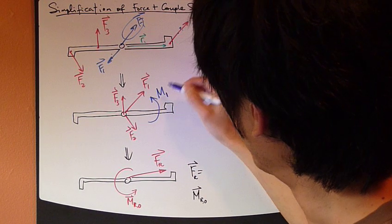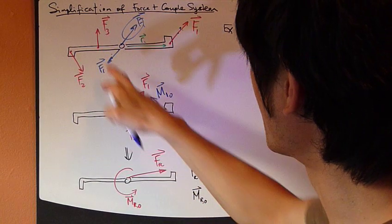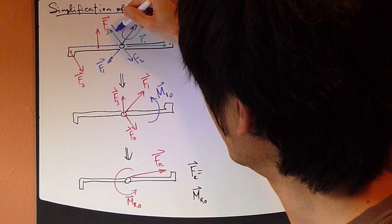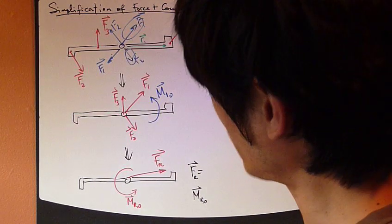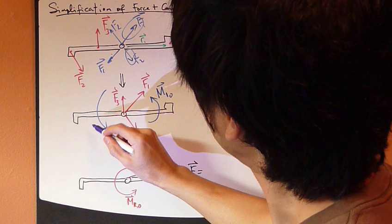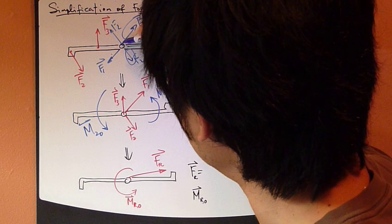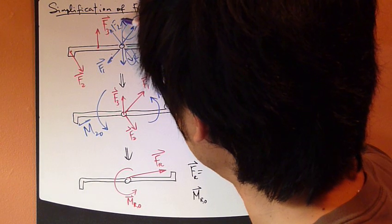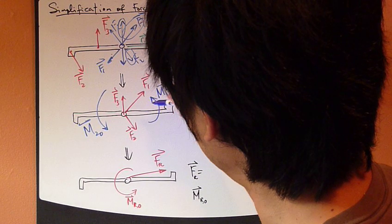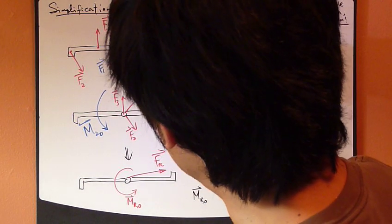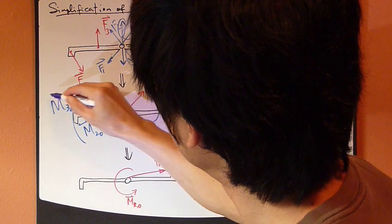These two are exactly the same — they form a counterclockwise moment, so we call it M1. Similarly, for F2, if I shift it to the pivot, I need to add an F2 and subtract an F2. This F2 is this F2, so what's left is these two. These two form a clockwise moment, so I'm going to draw a clockwise moment and call it M3O.